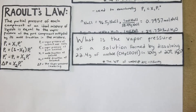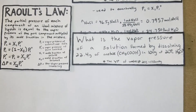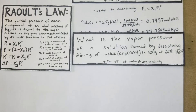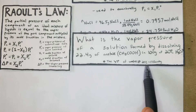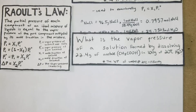Problem 2: What is the vapor pressure of a solution formed by dissolving 22.4 grams of acetate in 100 grams of water at 20 degrees Celsius? The vapor pressure of water at that temperature is 17.5 mmHg.